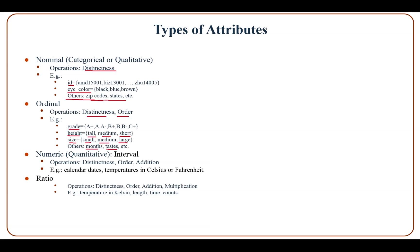Similarly, with size, small has lower order than medium and medium has lower order than large. Other examples include months — January, February, March — which are in order, or spiciness of food.